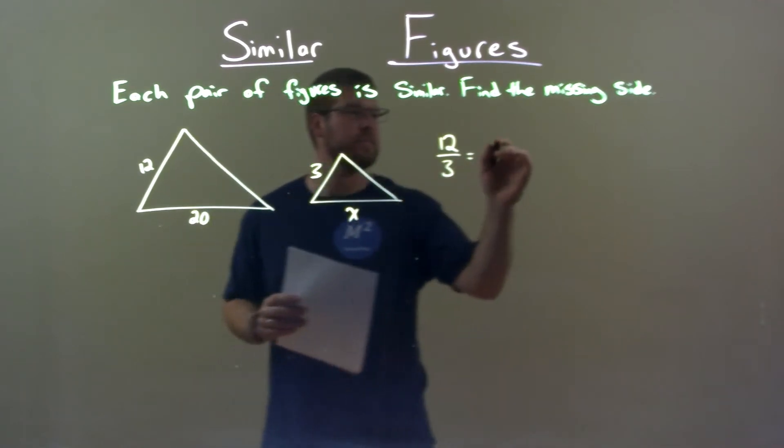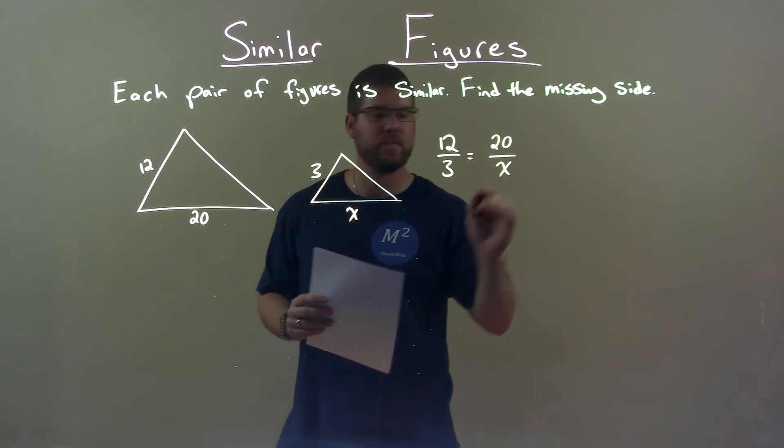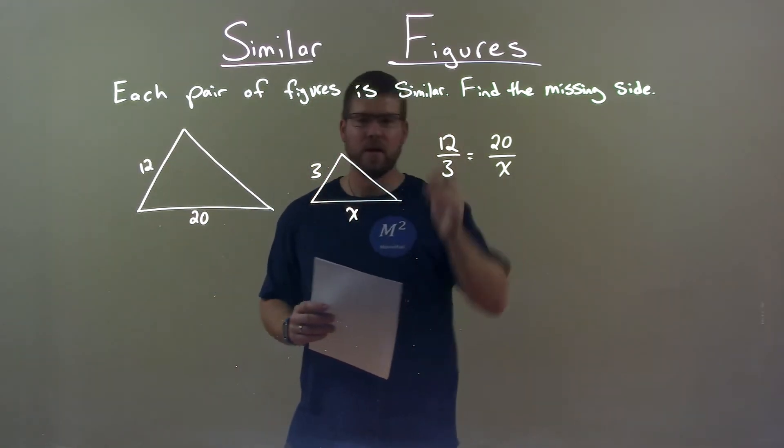is equal to 20, the bottom part, over its corresponding side, which is x. So we match up the corresponding sides when we do the ratio.